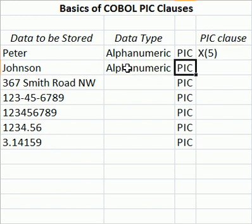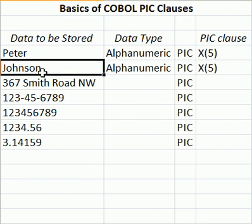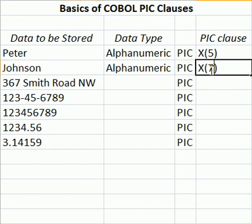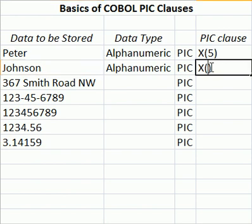For 'Johnson,' there's no numeric data there, so we use X. Johnson covers 7 characters, so the largest it would need to be is 7, giving us PIC X(7). Normally we'd want to be liberal and add a bit more — say 10 — as nothing is going to hurt that, but the COBOL program will allocate that much storage for utilization.